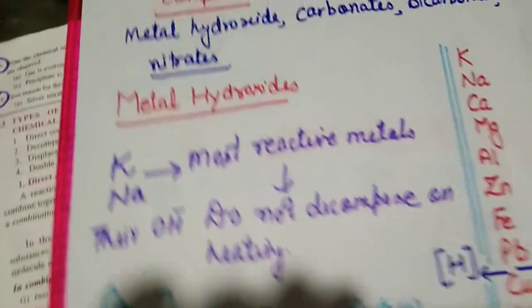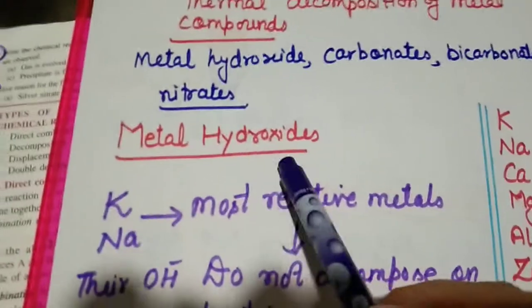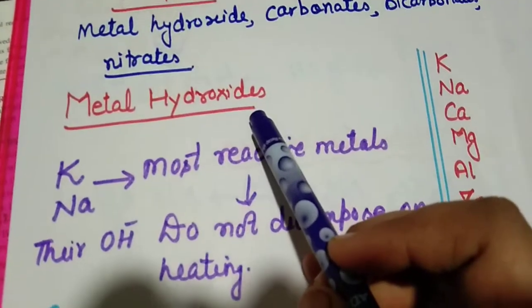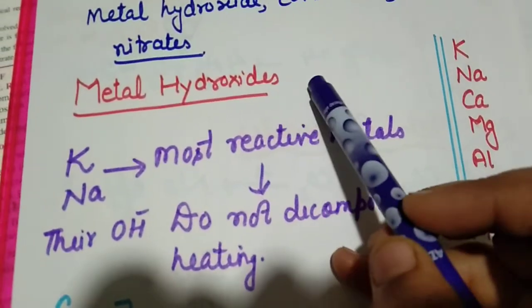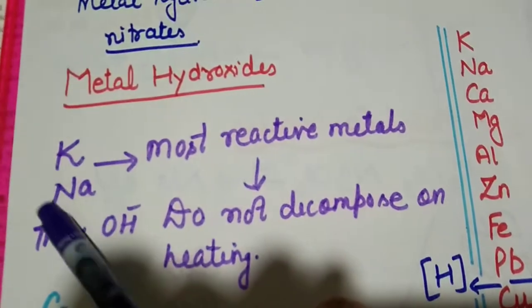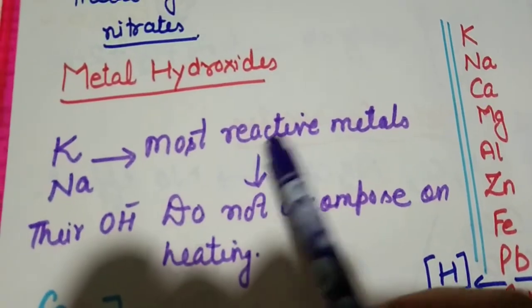Now we talk about the first compound, metal hydroxides. When metal hydroxides are thermally decomposed, when heated, how do they decompose or break? First comes potassium and sodium, those are most reactive metals.